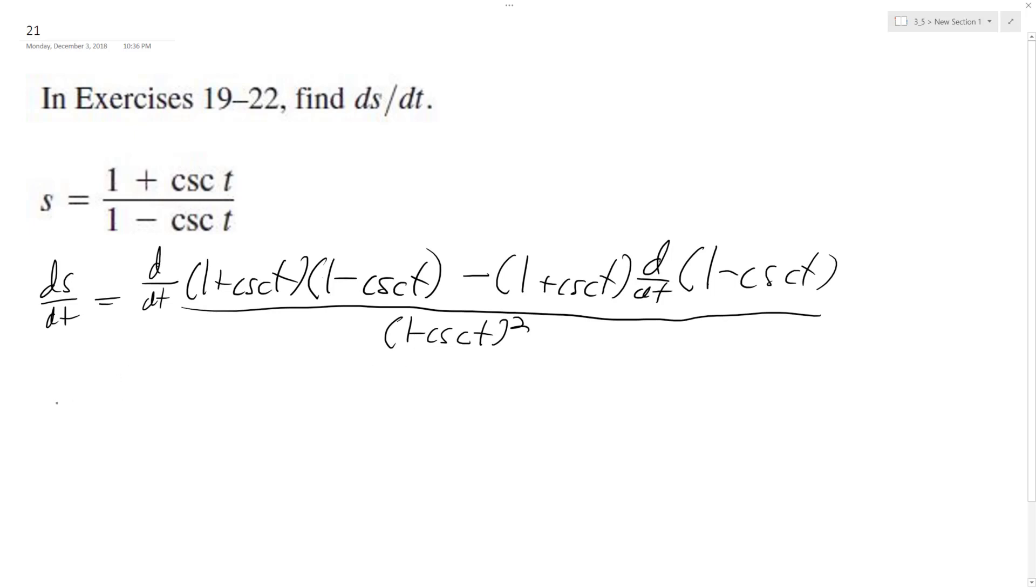Okay, and then what we end up getting is the derivative of the cosecant is negative cosecant t cotangent t.